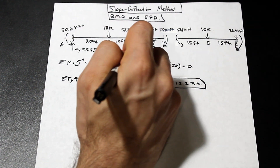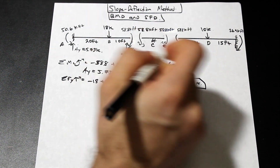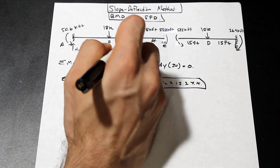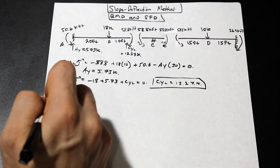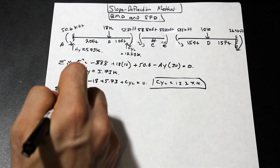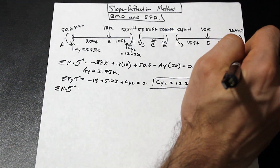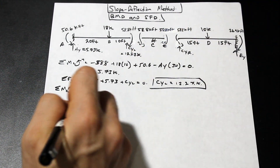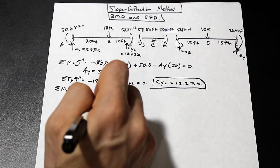Now let's solve the right side of the beam. We've found the reaction AY; now we need the end shears at the cut so we can move them over and solve for C. We're going to take the moment about the right side — we have EY and CY-right — and we set up the moment equation about this section.